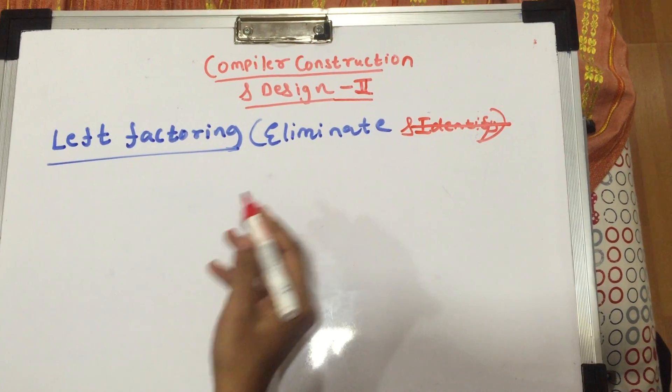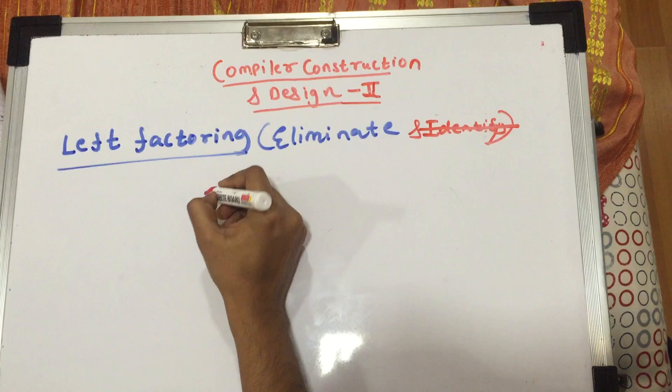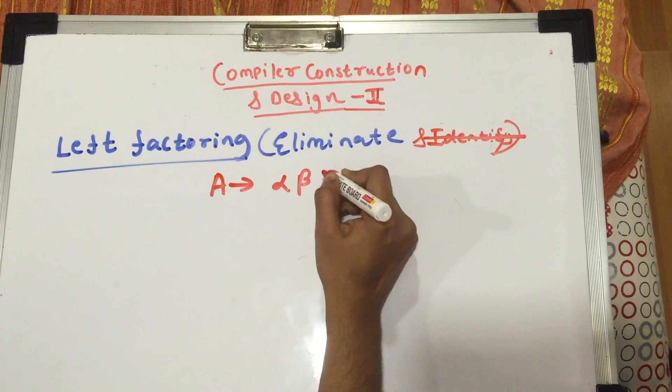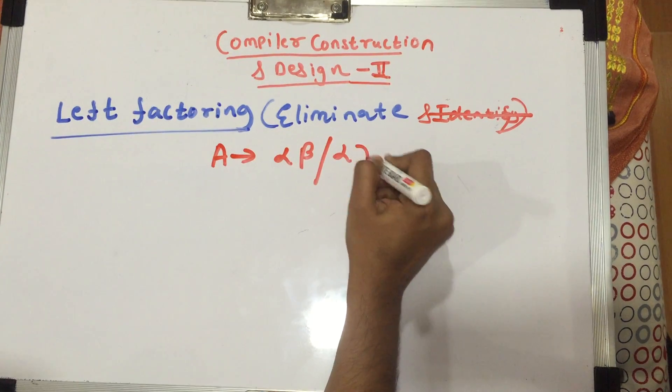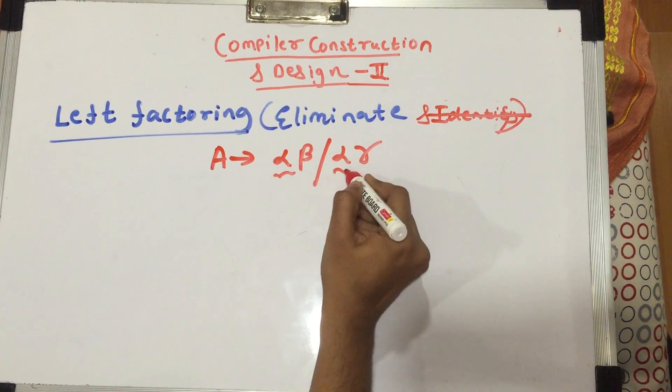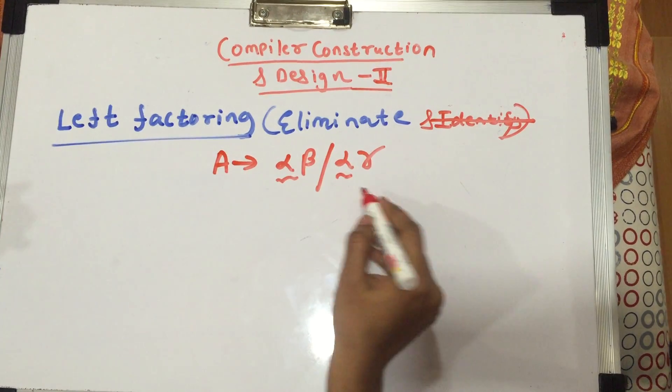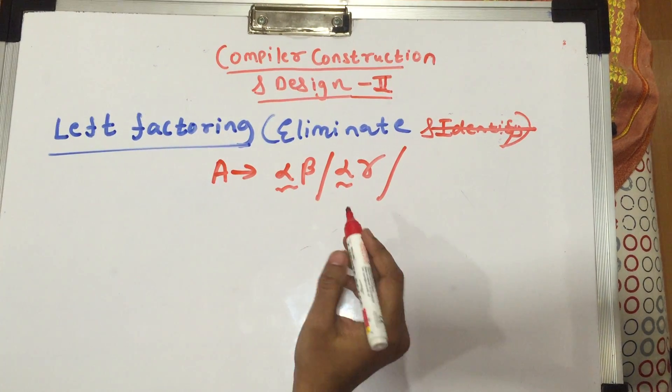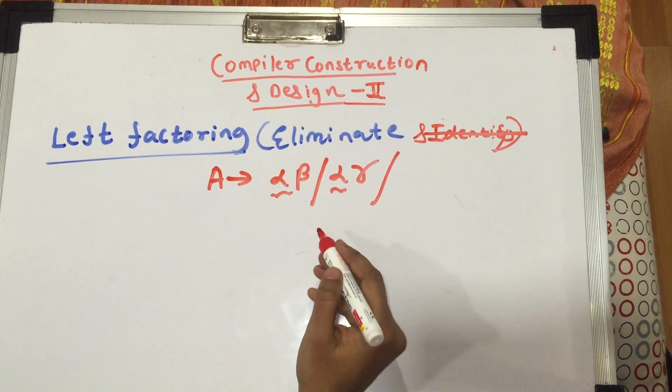How do you identify whether a grammar is left factoring? If it is of the form A gives you alpha beta slash alpha gamma, that is the initial terminals are the same for every option available, then it is left factoring. We'll be more clear as soon as we take a few examples.